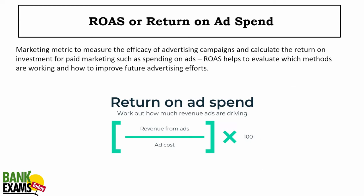Return on ad spend (ROAS): the formula is revenue from ads divided by ad cost. For example, if you made 5,000 rupees from ads and the ad cost was 3,000 rupees, that gives you your return on ad spend.